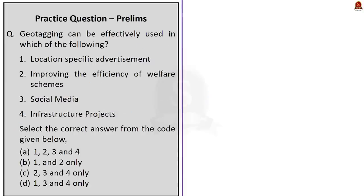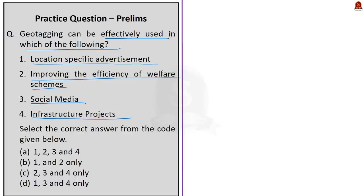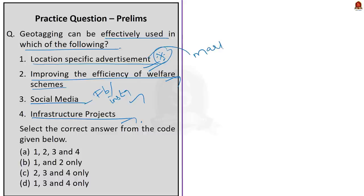Question 3: Geotagging can be effectively used in which of the following? Options: location-specific advertisement, improving the efficiency of welfare schemes, social media, infrastructure projects. During the discussion, we saw geotagging is used for infrastructure projects and welfare schemes like Pradhan Mantri Avas Yojana and MG NREGA — so options 2 and 4 should be in the answer. Geotagging is also used for tagging photos and videos in social media like Facebook and Instagram — so option 3 should be included. Location-based advertisement means creating customized and targeted marketing tailored to consumers in a specific place, and geotagging is effectively used in this type of advertising — so option 1 is also correct. Therefore, the correct answer includes all 1, 2, 3 and 4 — which is option A.